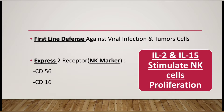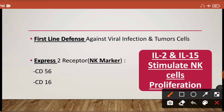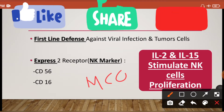The natural killer cell proliferation is stimulated by interleukin-2 and interleukin-15. These two interleukins stimulate natural killer cell proliferation — which is a very important MCQ point.